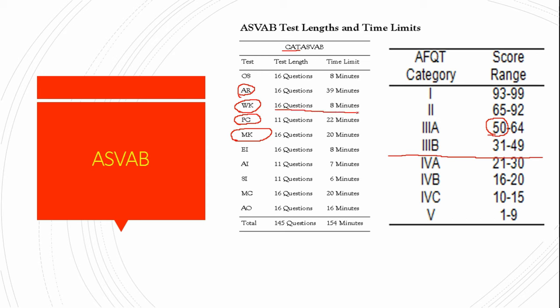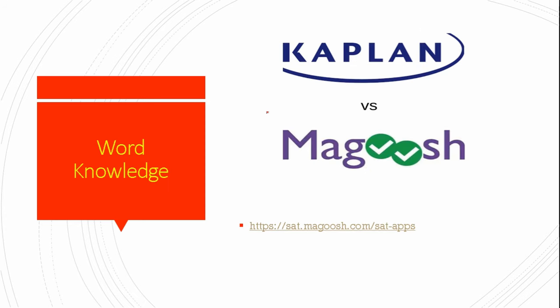The word knowledge section is a relatively short section of the ASVAB and its questions are very simple — it asks what word has a similar meaning to this word, with answer choices A, B, C, D. You should finish this section in about five minutes. There's no math, no reading — just vocabulary. That said, you want to make sure you do especially well on these 16 questions.